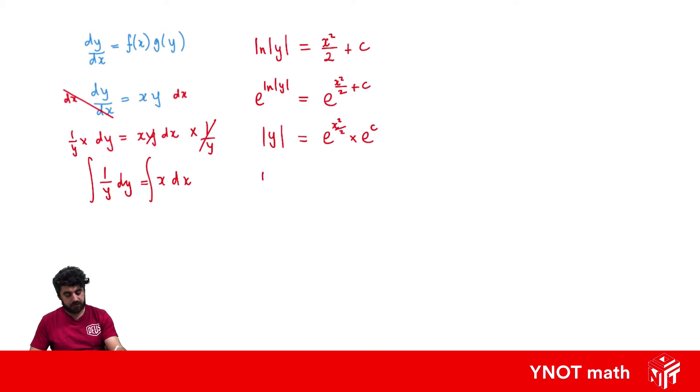The definition of absolute value means we should be looking at our positive and negative cases. So we get plus or minus y. We'll write e to the c first times e to the x squared over 2. Take the plus or minus to the other side, so we get y equals plus or minus e to the c times e to the x squared over 2. And e to the c is just a constant, so we're just going to let a equal plus or minus e to the c. So we get our final answer being y equals a times e to the power of x squared over 2 for the solution to that differential equation.